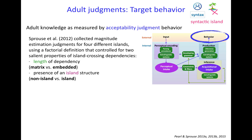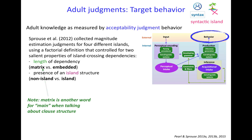They did that for islands, controlling for two salient properties of island-crossing dependencies. One is the length of that dependency — was the gap of the WH word in the matrix clause, another name for which is main clause, or was it in the embedded clause? That's one factor. The second factor was the absence or presence of an island structure — that is, the thing that you're not supposed to cross under the theory of syntactic islands.